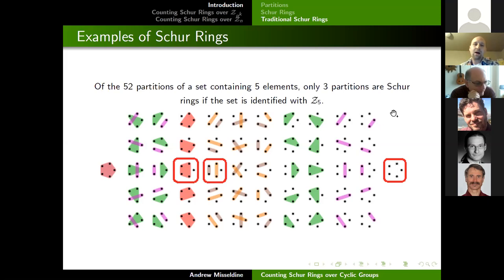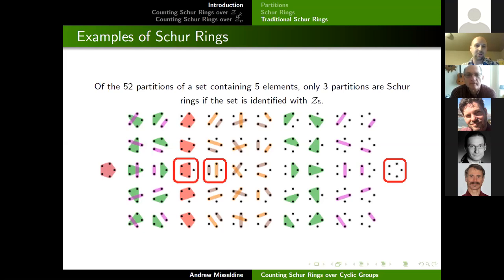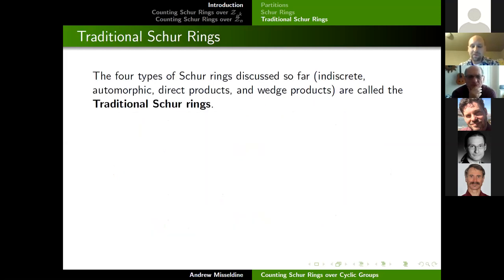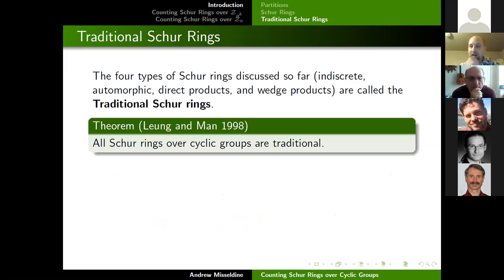If one wanted to enumerate the Schur rings for a group, it would be impractical to search through all set partitions and check which ones are Schur rings, because the number of set partitions grows very, very quickly. We need a much more strategic approach. For cyclic groups, we have the advantage that we can classify all possible Schur rings. The indiscrete, automorphic, direct product, and wedge product families together are called the traditional Schur rings, and it was shown in the 90s by Lüngenmann that all Schur rings over a cyclic group will be traditional — they'll fall into one of these four families.